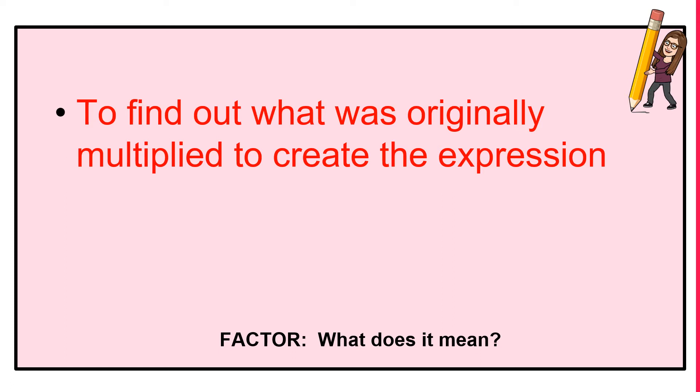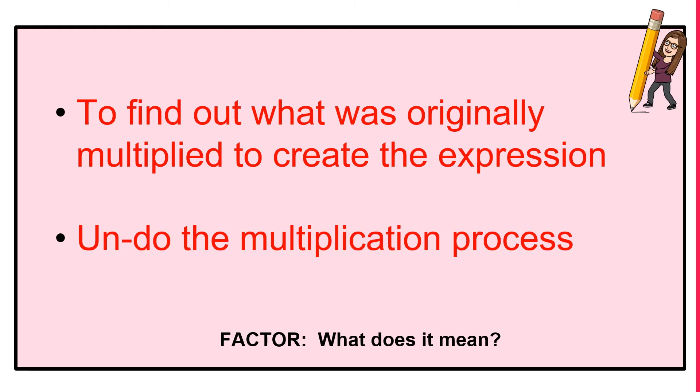We have two bullet points we're going to write. The first idea: we're going to find out what was originally multiplied to create the expression. So again, we're undoing the multiplication. Now keep in mind, if you have factored in the past - you've factored in Algebra 1, you've factored in Geometry, and we're going to spend time factoring in Algebra 2. This is one of those must-have skills for every math class. So make sure that if you struggle or need some additional support at any time, make sure to reach out.